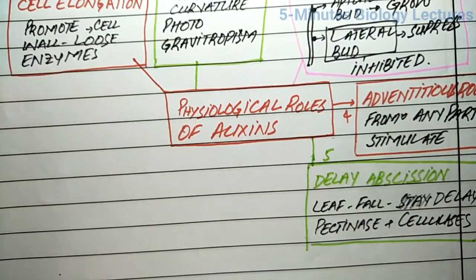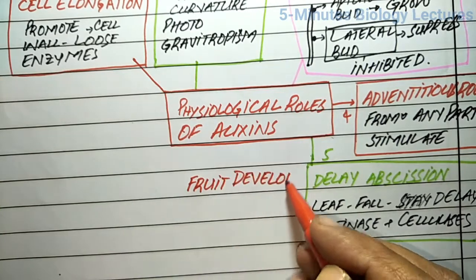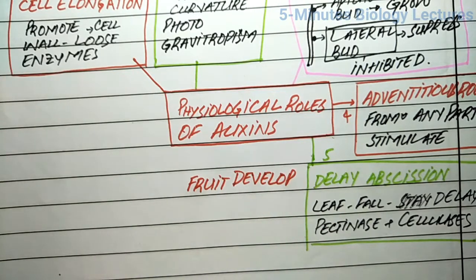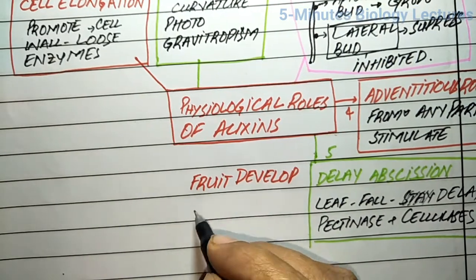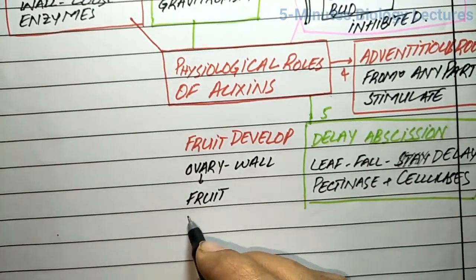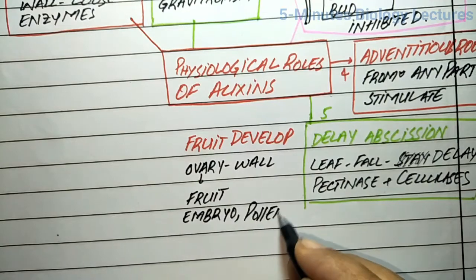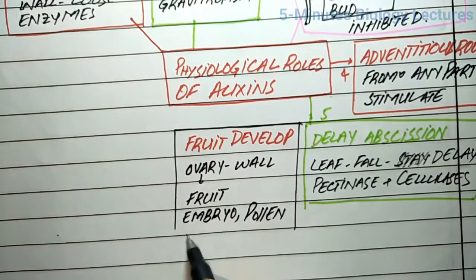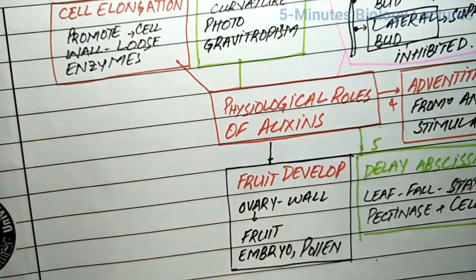Fruit development and its regulation are controlled by auxins. Pollen, endosperm, and embryo of developing seeds are rich sources of auxins. These higher levels of auxins are responsible for fruit set and growth. Fruit set means conversion of the ovary into the fruit.